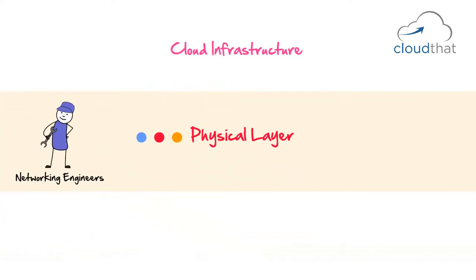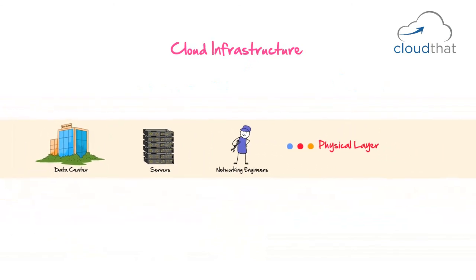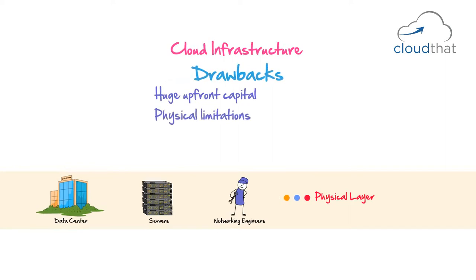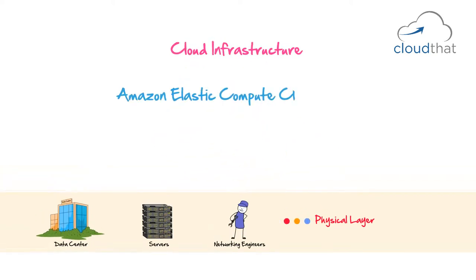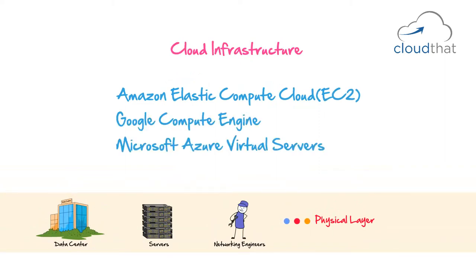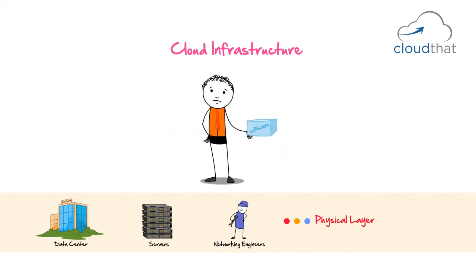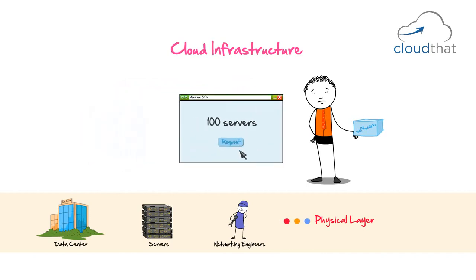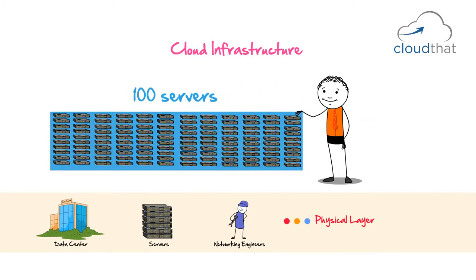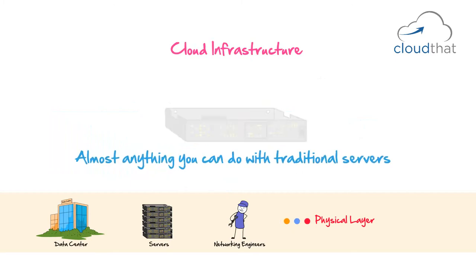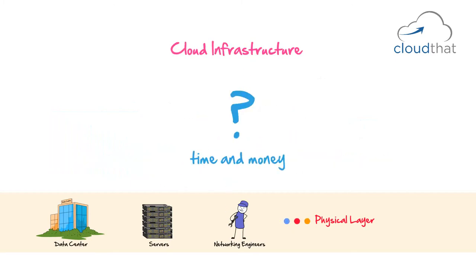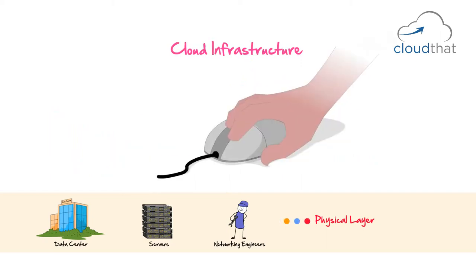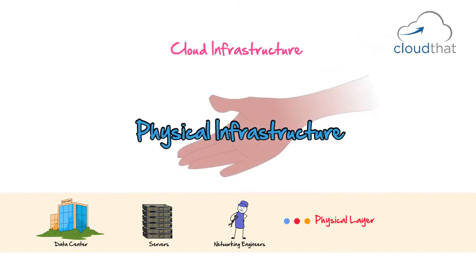The entire physical layer is replaced by cloud services like Amazon Elastic Compute Cloud, Google Compute Engine, and Microsoft Azure Virtual Servers. Instead of buying all the servers yourself, you go to Amazon EC2 and with a few clicks or an API call, you can request hundreds of servers provisioned for you. Within a few minutes, you will have your servers ready — you can connect to them and deploy your software, use them for simulation, testing, or almost anything you can do with traditional servers. Why invest time and money into buying and maintaining hardware when you can get your entire physical infrastructure with a few clicks?